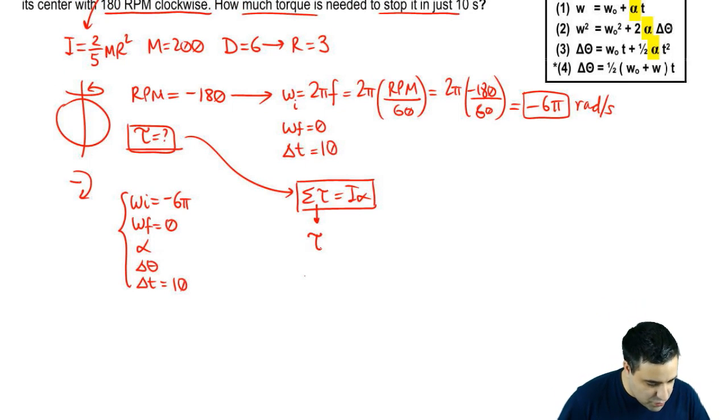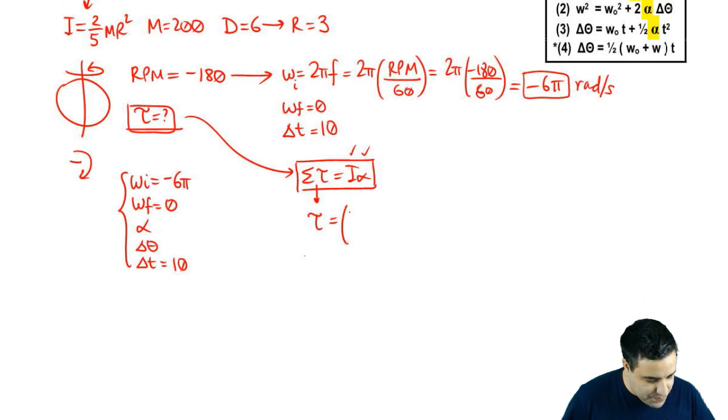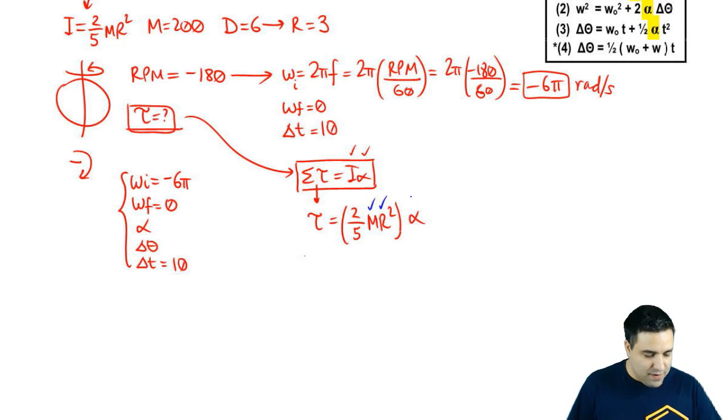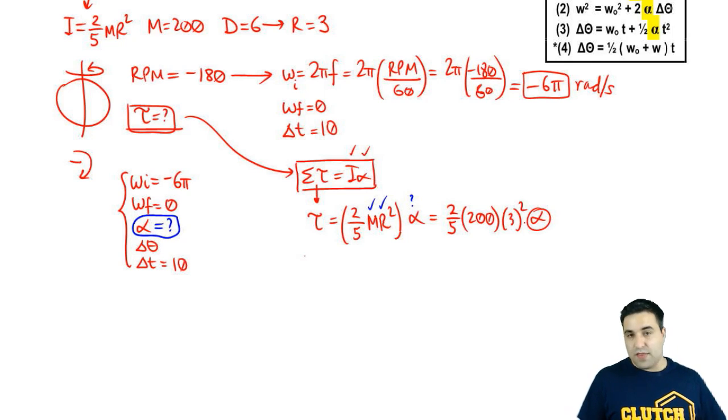So the sum of all torques will become just the torque that you're looking for, and that is I-alpha. If I can have I and I have alpha, I'm done, and that will be my answer. So let's expand I to 2 over 5 m r squared and alpha. Notice that I have m, I have r, but I don't have alpha. So what you're going to do is go over here and try to find alpha. Let me plug in these numbers, the only thing we're missing is alpha. m is 200, r is 3 squared, alpha. As soon as we have alpha, we can plug it in there.